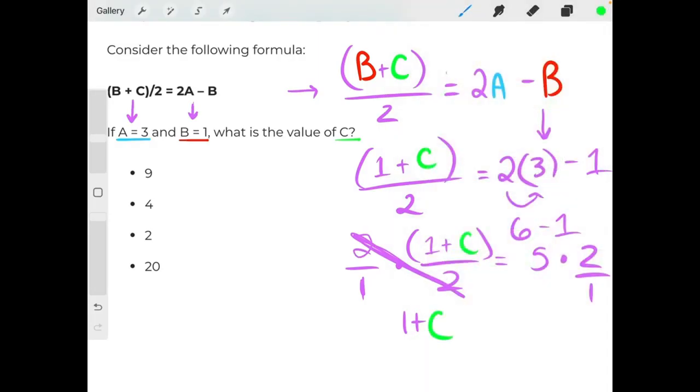And then on the right side of the equal sign, we would have 5 times 2, because 2 over 1 is just 2. So 5 times 2 gives us 10. The last step to isolate C would be to move this 1 over to the other side.